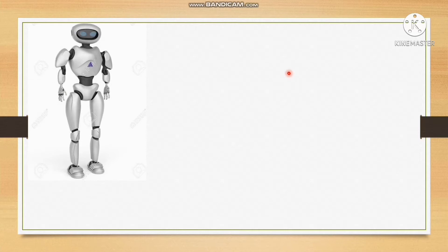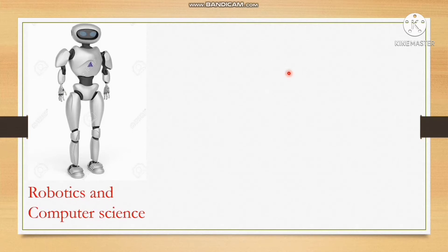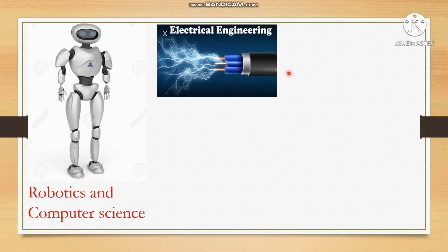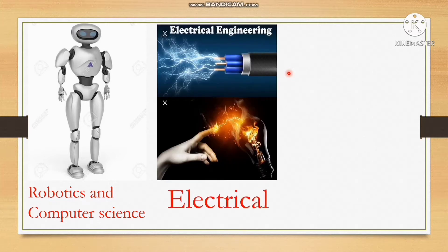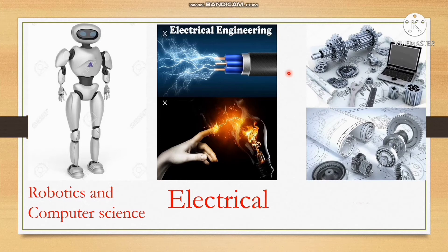This EIE branch is a specialized and mixed branch. It is a combination of robotics, computer science, electrical engineering, and mechanical engineering. So this branch is a mixture of these four areas — you can also call it robotics and computer sensing engineering, combined with electrical and mechanical.